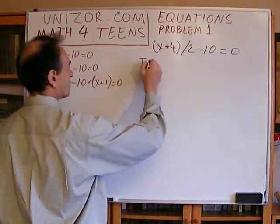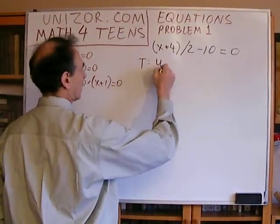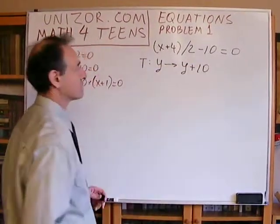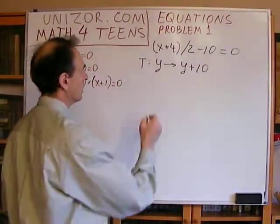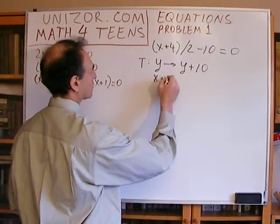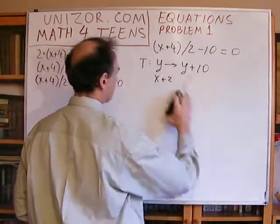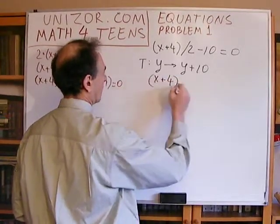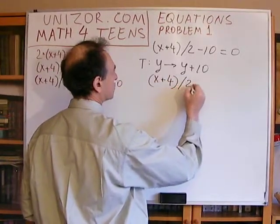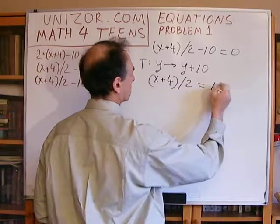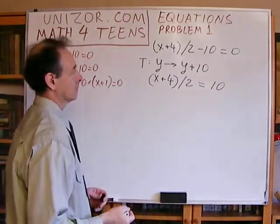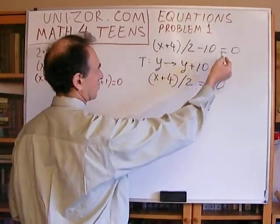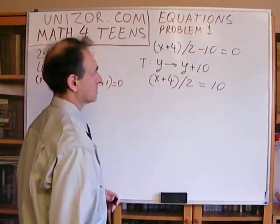The first transformation is adding 10. What we get is x plus 4 divided by 2 equals 10. Minus 10 plus 10 is 0, and plus 10 on the right side gives 10.